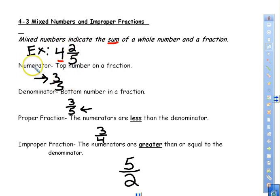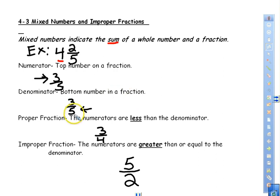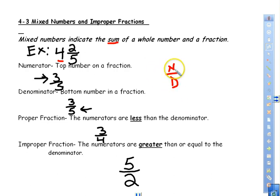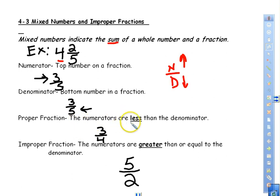When we talk about the fraction, we have a numerator and a denominator. The numerator is the top number — in this case, the three. The denominator is the bottom number, which is the five. One memory trick: Notre Dame for numerator/denominator. Another: N for north, which is always up, and D for down — just some ways to remember numerator and denominator.